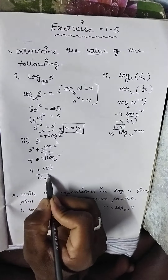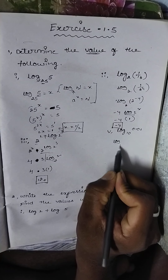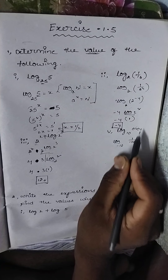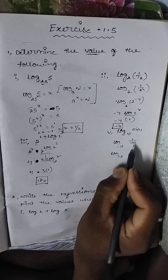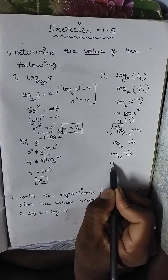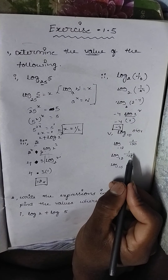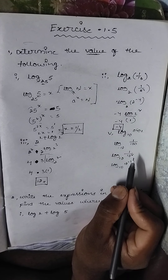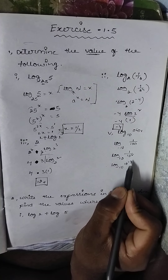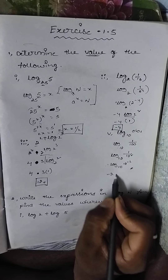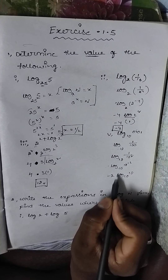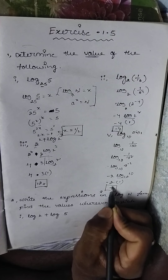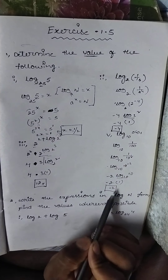Next: log base 10 of 0.01. We write 0.01 as 1/100, which is 1/10^2. Using the formula 1/a^m = a^(−m), this becomes log base 10 of 10^(−2). Bringing −2 out using the power rule gives −2 × log base 10 of 10. Since log base a of a = 1, the answer is −2 × 1 = −2.